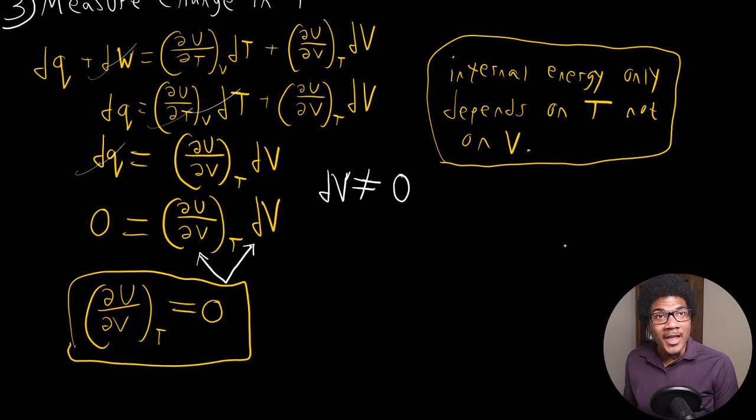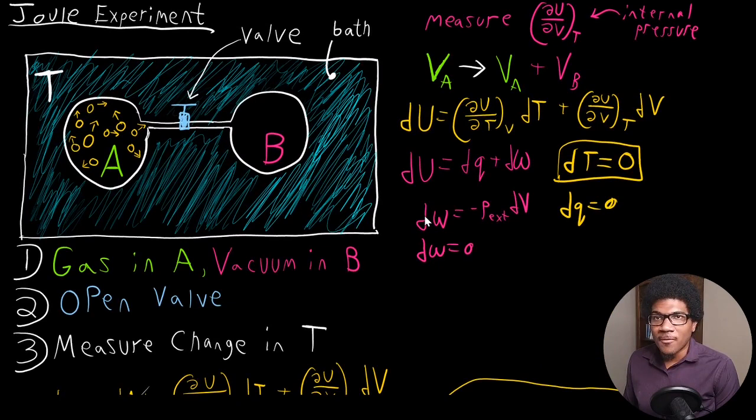Now, we know that for an ideal gas, this is exactly true. We looked at the internal pressure for an ideal gas and showed that, just by definition, it is zero. But what Joule was saying here is that this, what we know for an ideal gas, also carries over to a real gas in a real experiment.